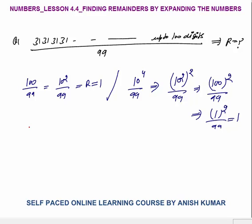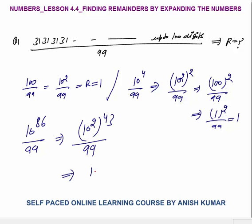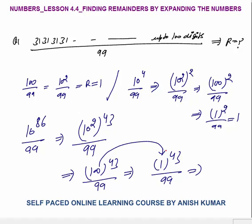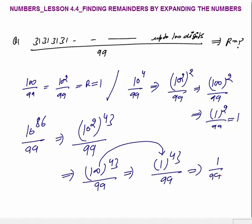So any even power of 10 divided by 99 gives remainder 1. For example, 10^86 ÷ 99 = (10^2)^43 = 100^43 ÷ 99. Replacing 100 with its remainder of 1: 1^43 = 1, and 1 ÷ 99 gives remainder 1. So any even power of 10 gives remainder +1 when divided by 99.